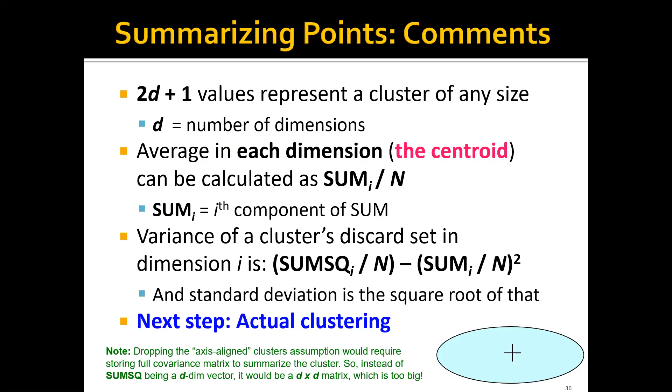You may have noticed that we only need 2d plus 1 values to represent a cluster of any size, no matter how many data points we have in a cluster. The average in each dimension, or the centroid, can be calculated as sum_i divided by n. The variance of a cluster's discard set is computed using this equation. Note that this is just from elementary statistics, saying that the variance of x equals the expectation of x squared minus the square of the expectation of x. And the standard deviation will be just the square root of this variance.